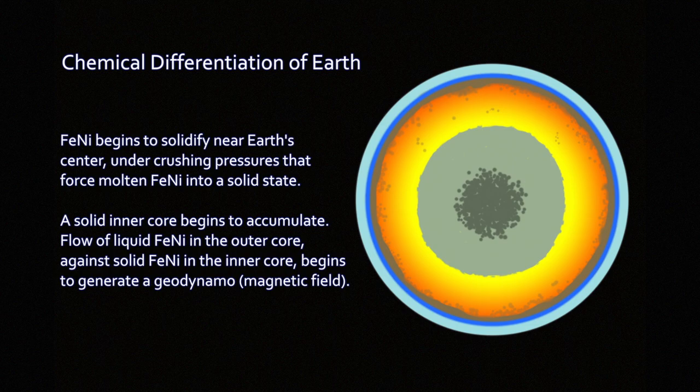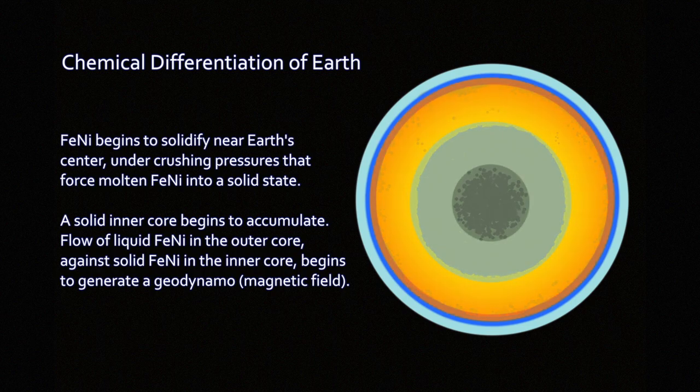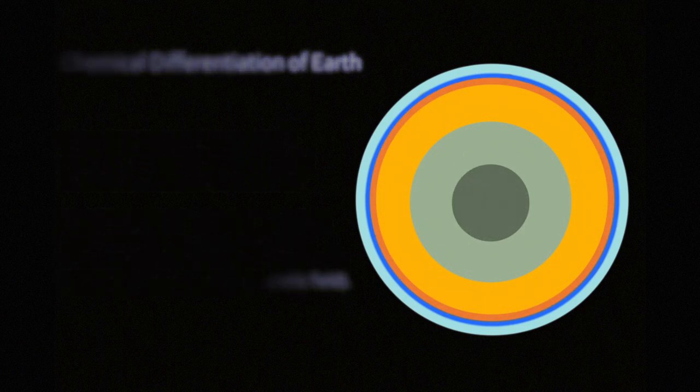And so solid iron-nickel begins to accumulate as rubble forming a larger and larger solid iron core inside the Earth. Until we become a differentiated body, eventually, with a solid iron-nickel inner core, outer core of liquid iron, and a mantle of silicate rock, and a crust of silicate rock surrounding that.